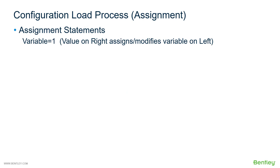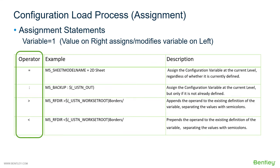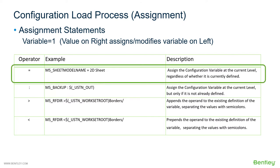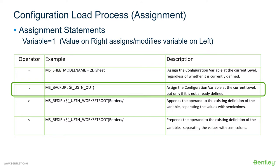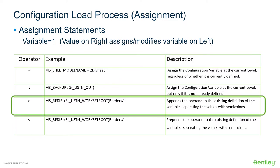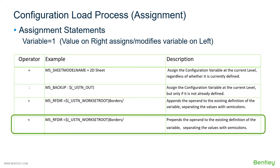Let's take a quick look at how assignment statements work. They're very similar to any other scripting language where the value on the right assigns or modifies the variable on the left. There are four main operators: equal (=), colon (:), greater than (>), and less than (<). The equal assigns the configuration variable at the current level regardless of whether it is currently defined. The colon assigns the variable only if it is not already defined. The greater than operator appends to the existing definition, separating values with semicolons. The less than operator prepends to the existing definition, also separating values with semicolons.